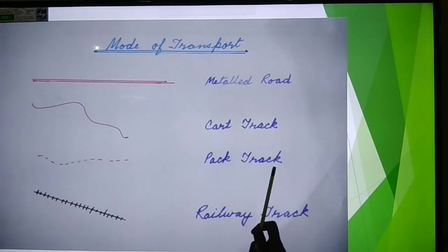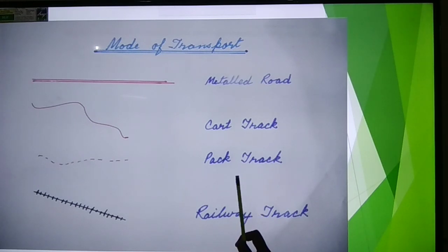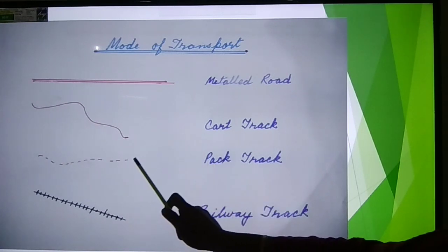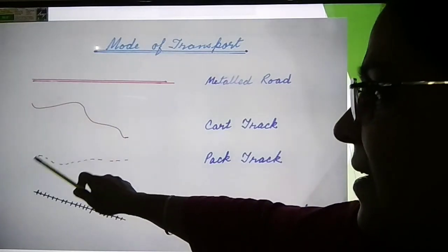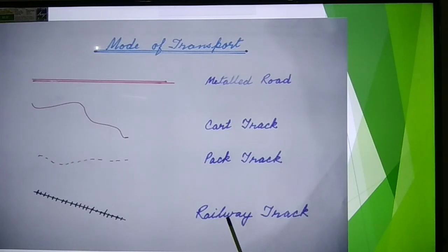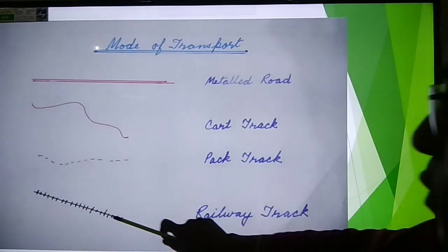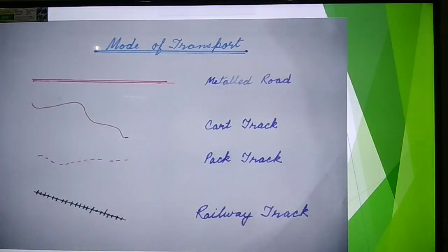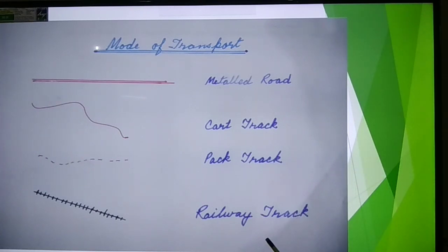Third one is pack track. Pack track is used by animals to carry loads — like donkey, mule, and so on. Pack track is shown on the topo sheet with a red line but with dashes. Fourth one is railway track, which is shown with a black color. This is the symbol for the railway track.